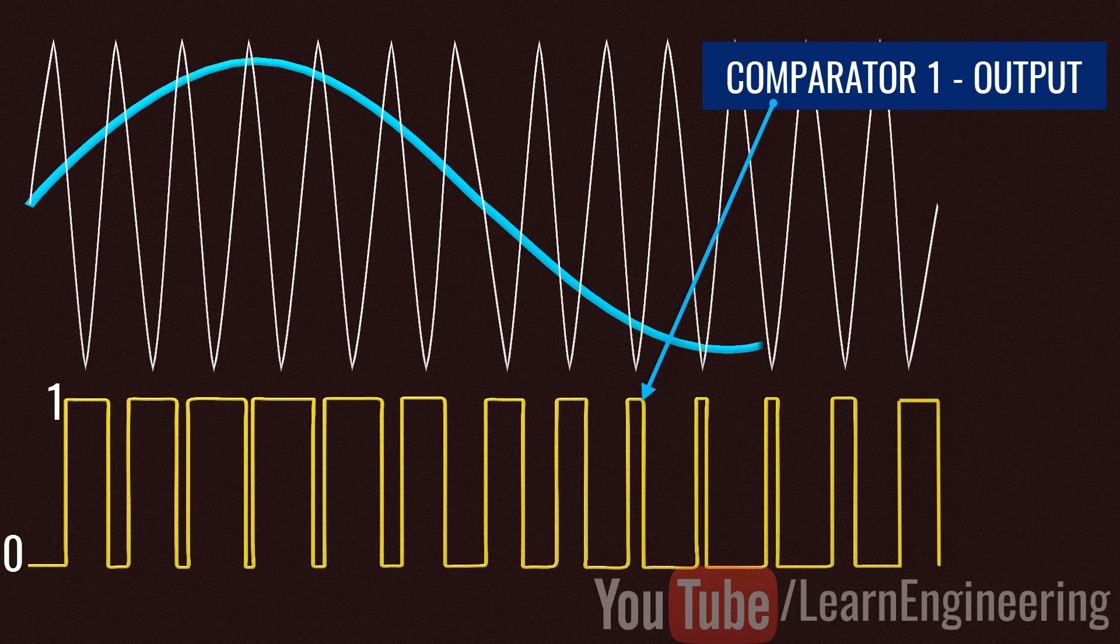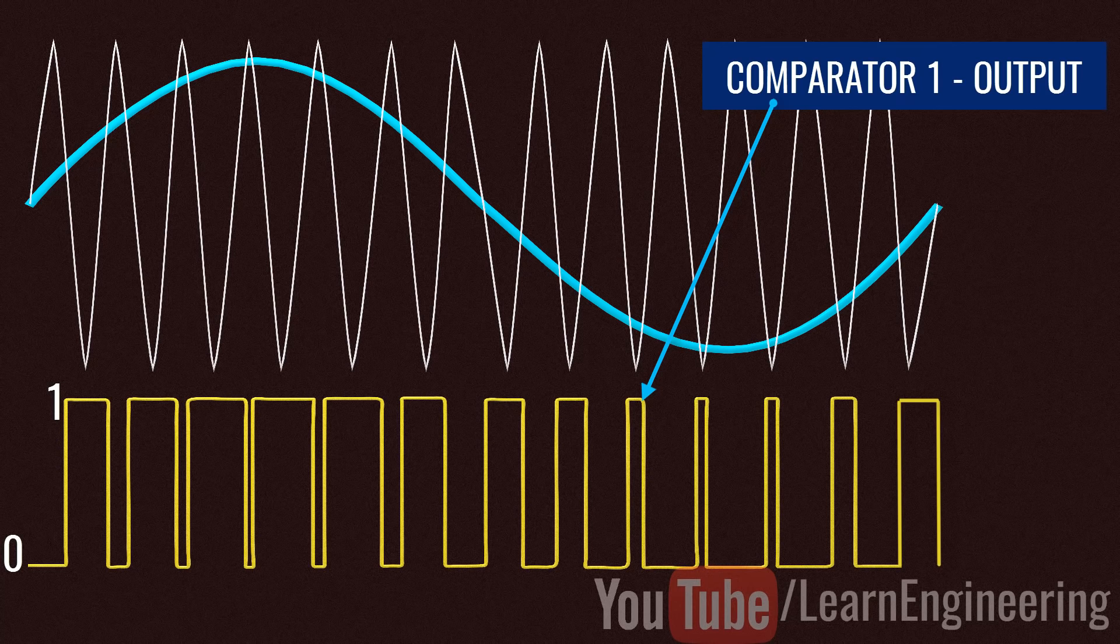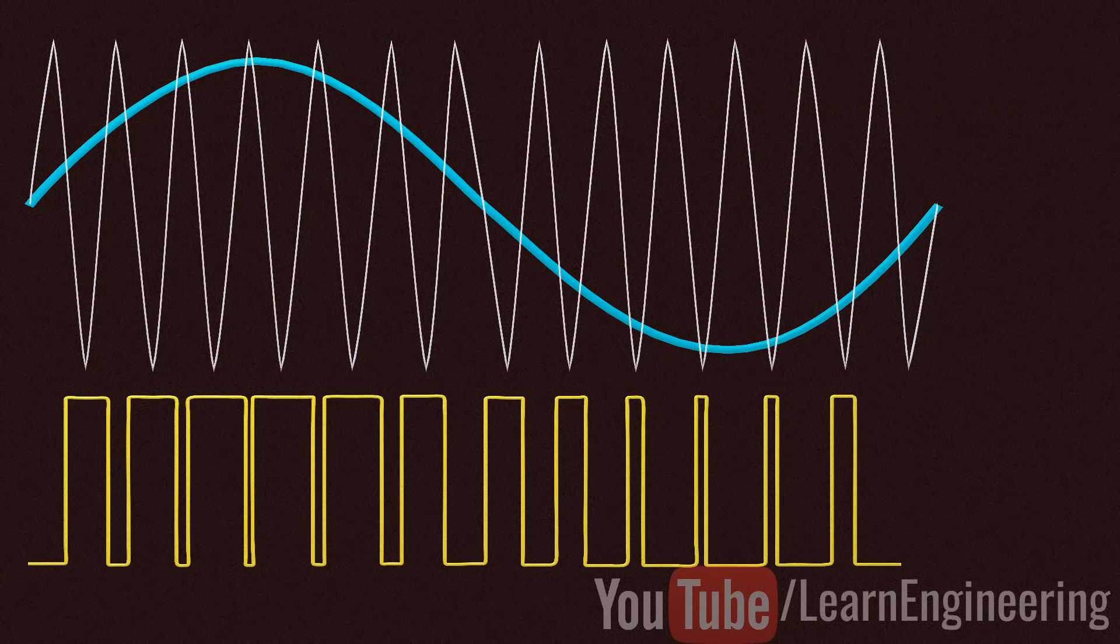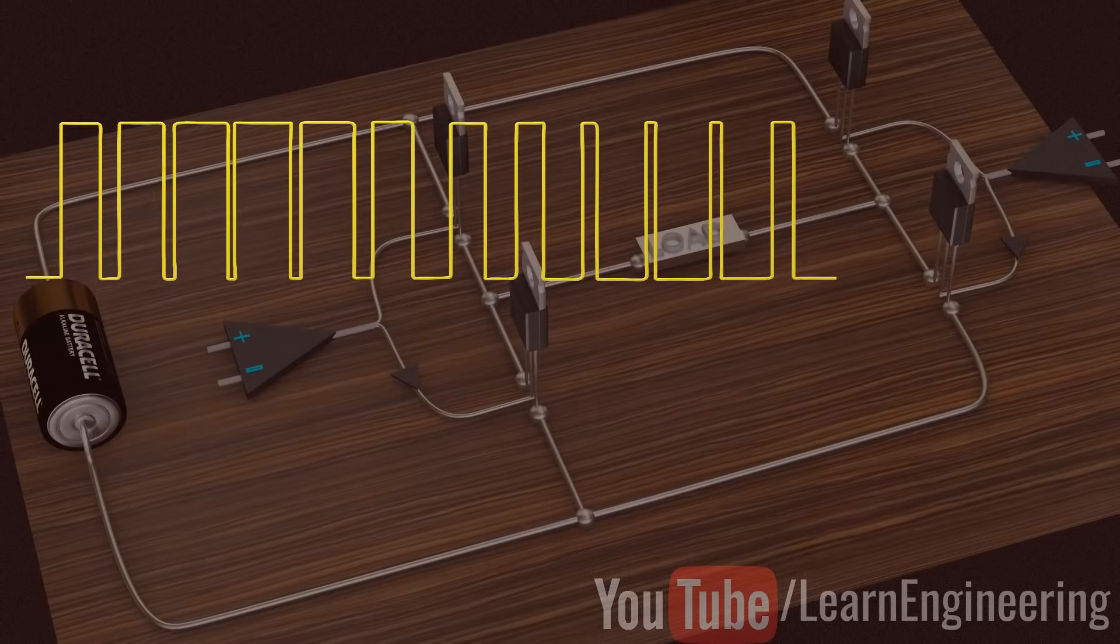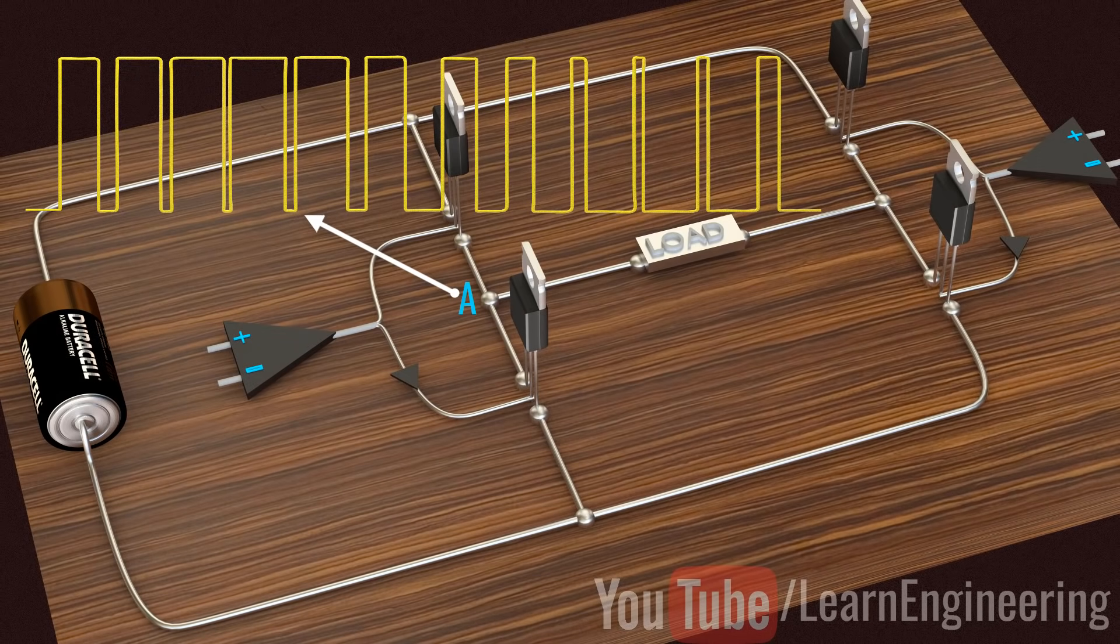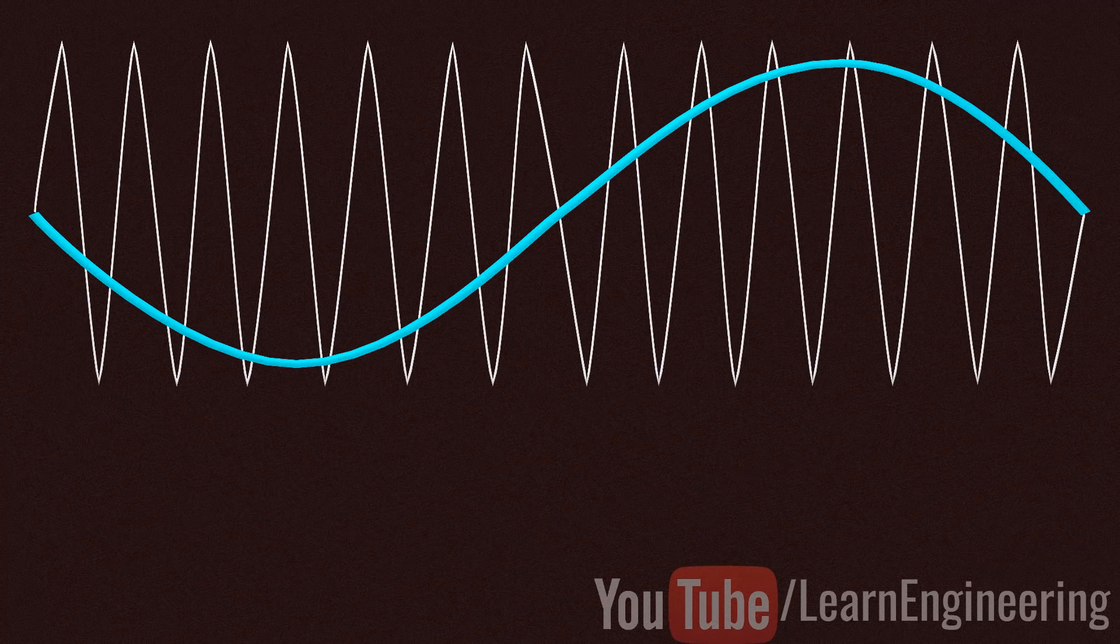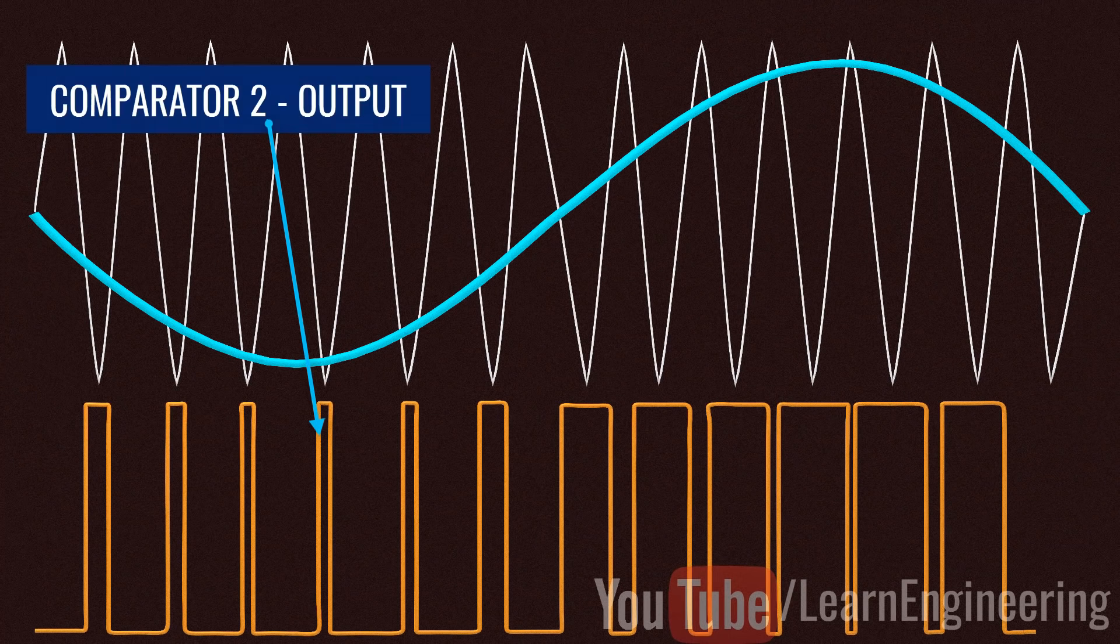Control signal of 1 turns on the MOSFET. The voltage pulses produced at point A are shown. Apply the same switching logic and observe the voltage pulses generated at point B.